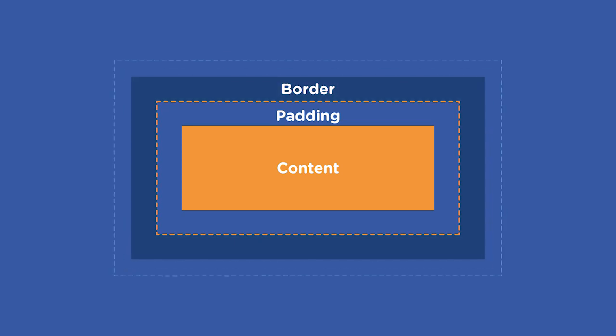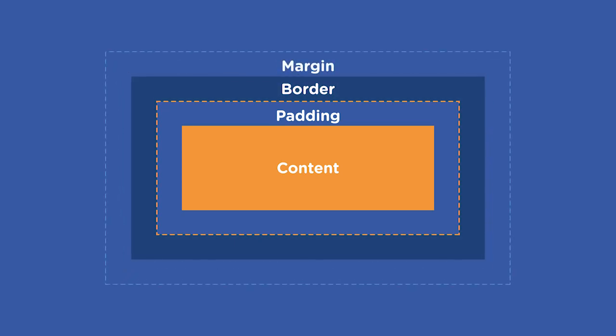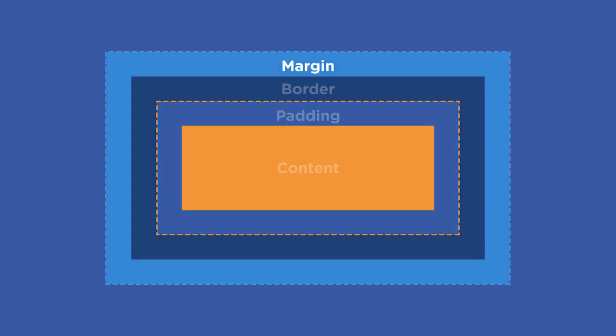Finally, the margin area exists outside of the box. It's the space around an element that separates it from other elements. It's pretty easy for beginners to mix up padding and margin, so if you're a note taker, you might want to write this down: Padding creates space inside the box — it's the space between the content and the border. Margin creates space outside the box — it's the space around the border.